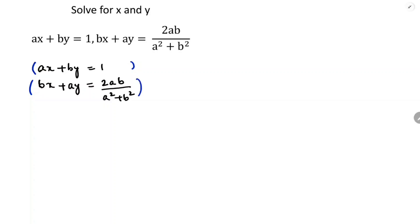For the first equation, I will make the coefficients of x equal. Here it is a and here it is b. So I will multiply the first equation by b, so that will become ab, and the second equation I will multiply by a.